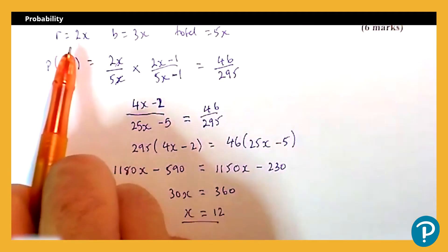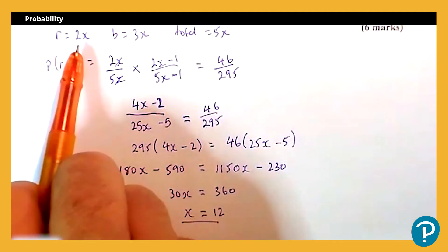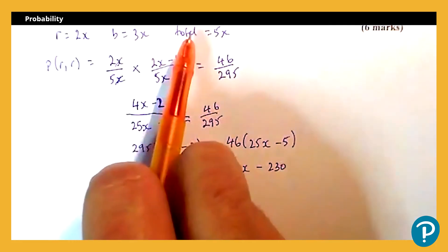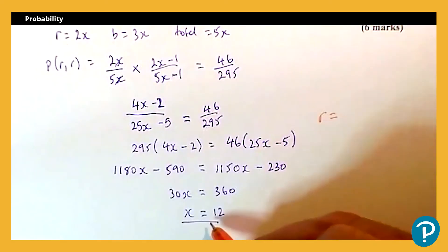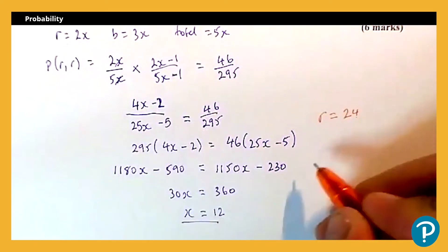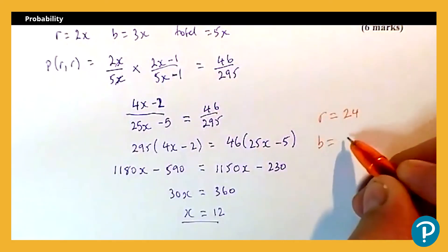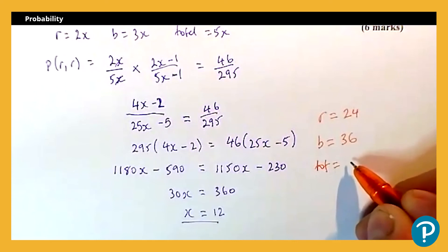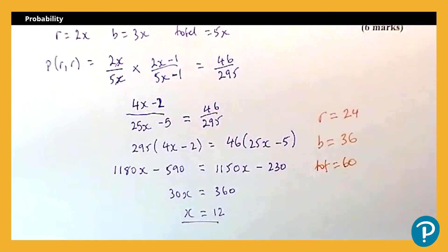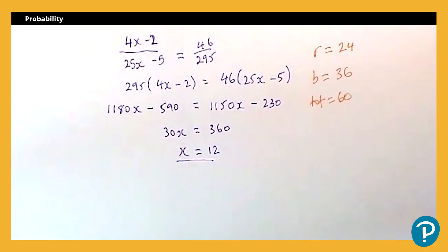Now if we refer back to the top, we know that r is equal to 2x, b is 3x, and the total is 5x. So I can now write down what those values actually are. So r is 2x, 2 lots of 12 is 24. Blue is 3x, 3 lots of 12 is 36. And the total, 5x, 5 lots of 12 is 60.